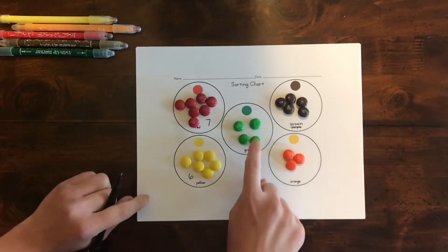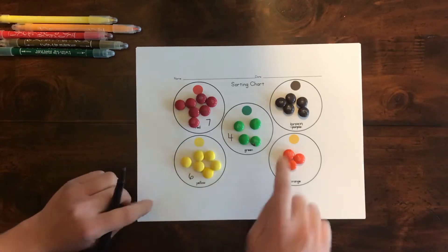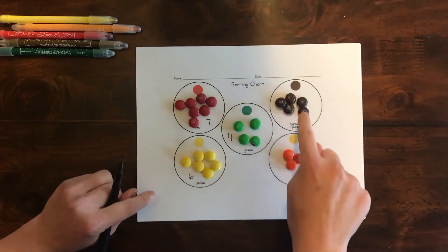Let's count green. One, two, three, four. Then we'll count brown. One, two, three, four, five.